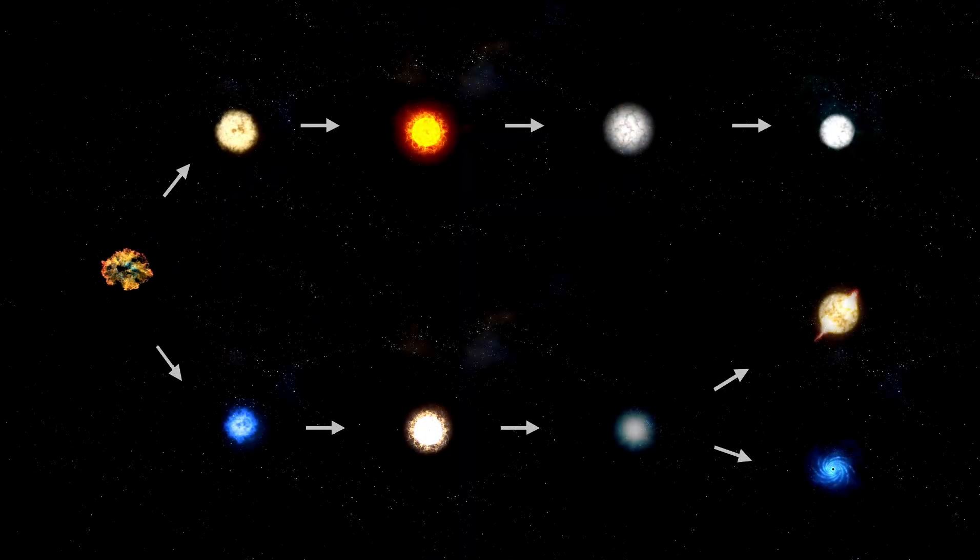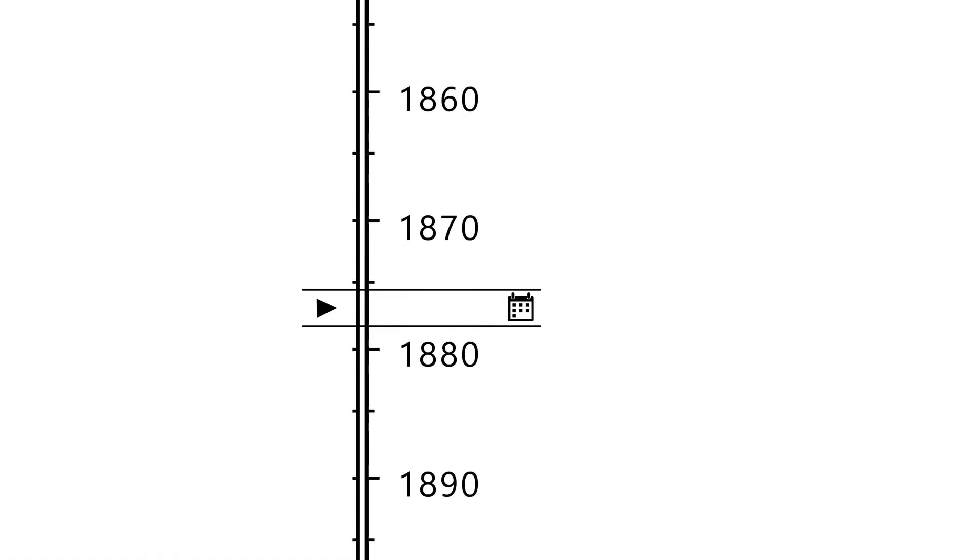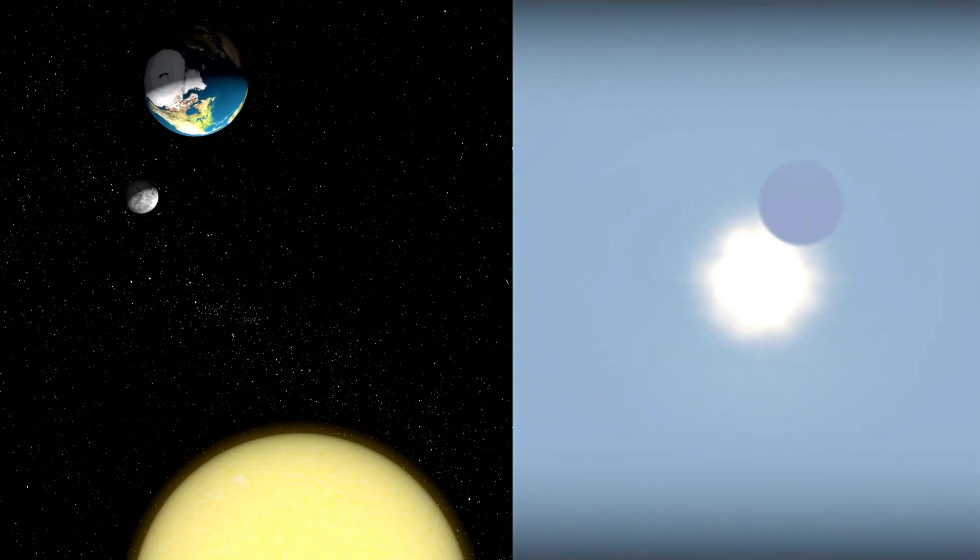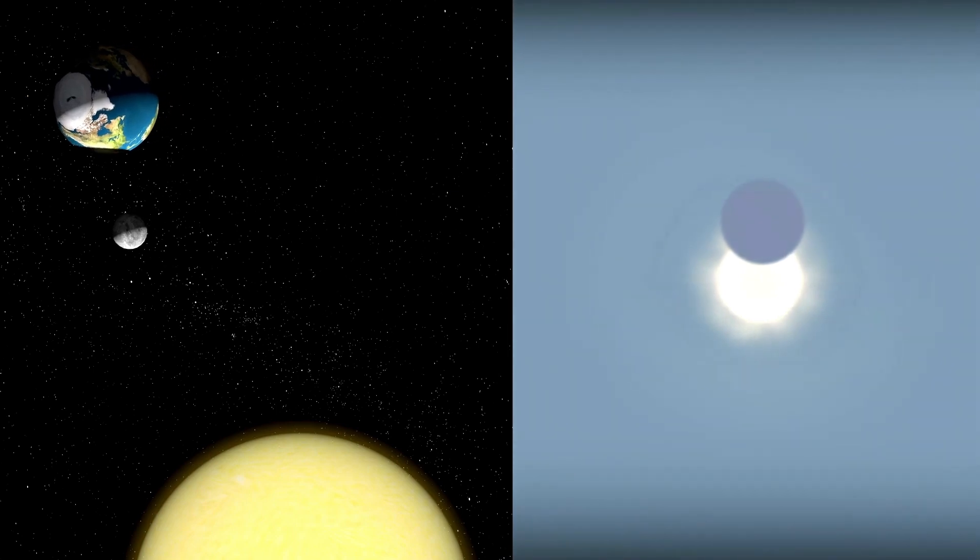Betelgeuse's age is equally remarkable, estimated to be around 8 to 8.5 million years old. It may seem young by human standards, but in stellar terms, it is ancient. Stars like Betelgeuse have short lifespans compared to smaller stars like our Sun, and its current phase represents the final stages of its existence.